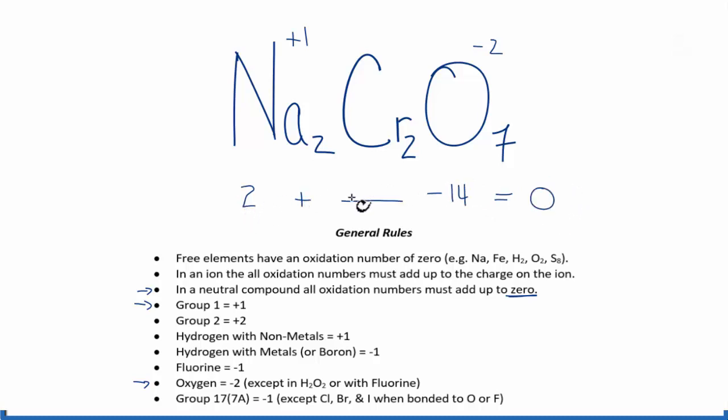So 2 plus 12 minus 14 equals zero. So this is a 12 here. So both of these chromiums have an oxidation number of plus 12, but we have two of them. So each one is going to be plus 6.